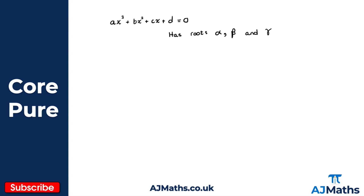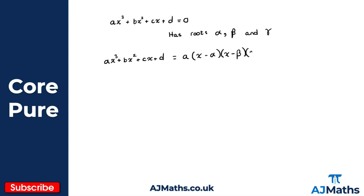Then we could write this in a factorized form, so we know that we can write ax cubed plus bx squared plus cx plus d in the form of a lots of x minus alpha, times x minus beta, times x minus gamma.